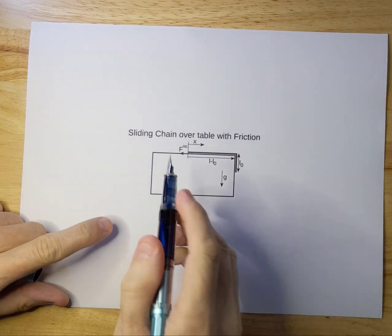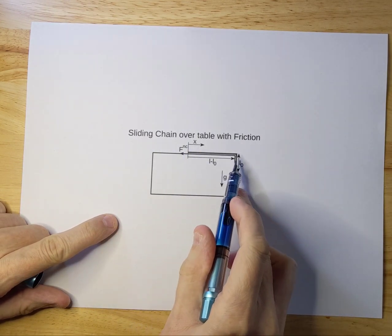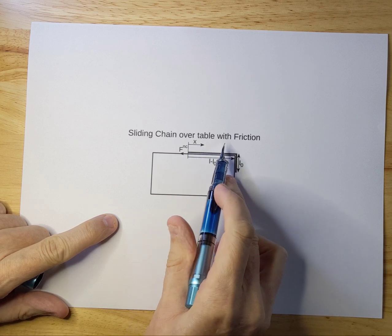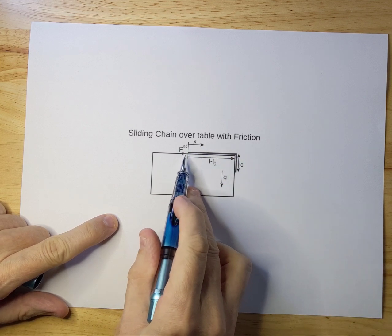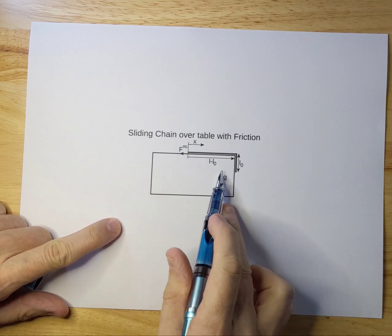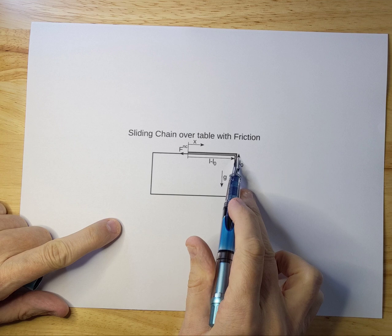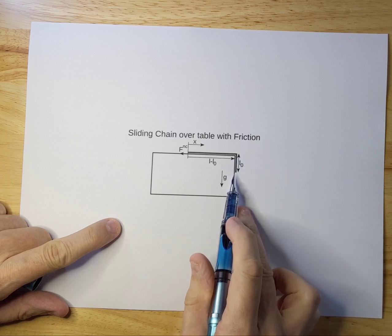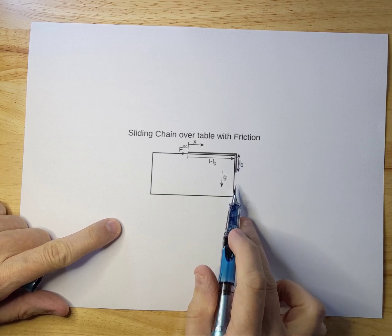Today I'm going to talk about a sliding chain that you see over here, over a table with friction. So there is friction on the table. There's also gravity. And because there is gravity, the chain, if it hangs over a sufficient amount, will start accelerating downwards.